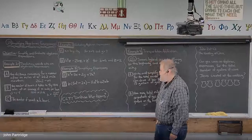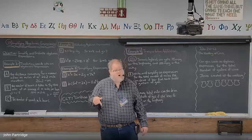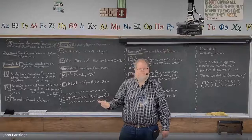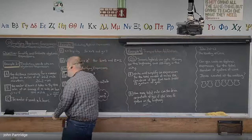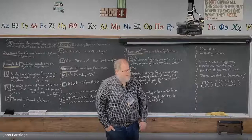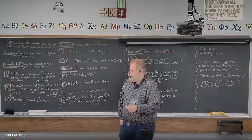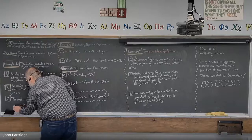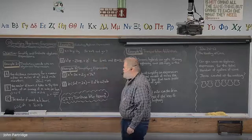Part C: the number of seconds in H hours. We know there are 60 minutes per hour and 60 seconds per minute — two multiples of 60. So if I have one hour, that's 60 times 60, which is 3,600 seconds. If I have two hours, I'd take 3,600 times 2. The expression is 60 times 60 times H, which simplifies to 3,600H. That represents the number of seconds in H hours.